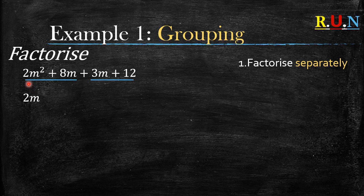Now remember: when we have letters, we look at the exponents. This is m squared and the other one is m to the power one. We always use the smallest exponent — m to the power one — so that's why we have 2m as our factor.